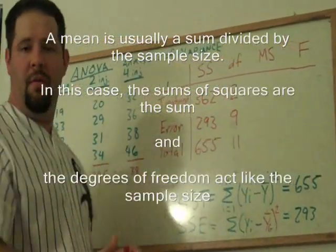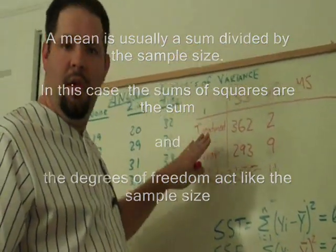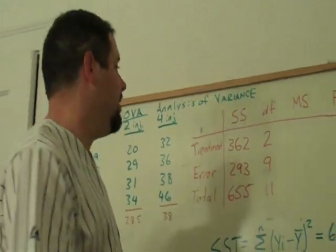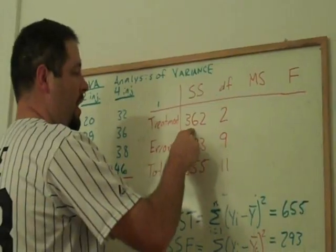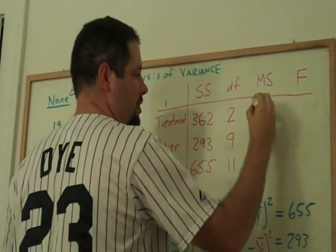All we have to do to get the mean squares is to divide the sums of squares by the degrees of freedom. Sort of a mean amount of sums of squares that are attributable to this component of the variance. So, if we go ahead and divide two into 362, well, that one I can actually do.